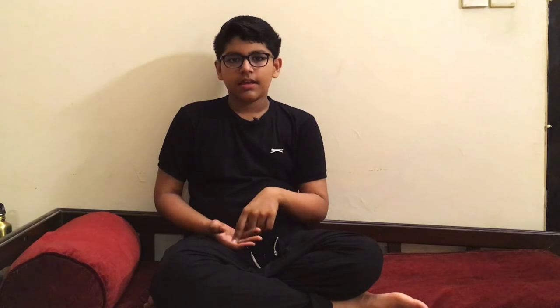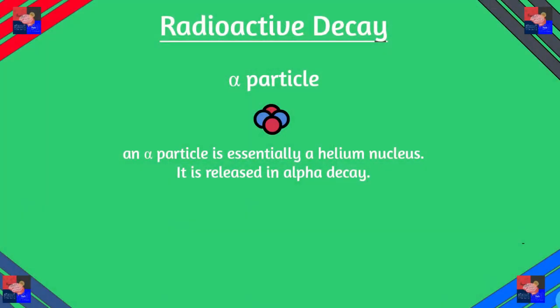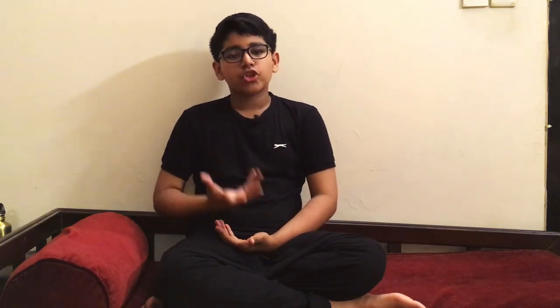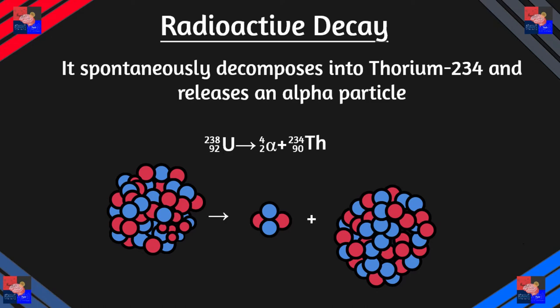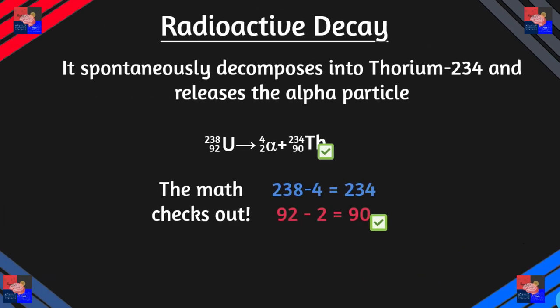First is alpha decay, second is beta decay, and lastly gamma decay. The alpha particle is essentially a helium nucleus — two protons, two neutrons. For an example, let's look at the most famous radioactive element of all time: uranium. The most common isotope is uranium-238, which is about 99% of all natural uranium. It spontaneously decomposes into thorium-234 and releases an alpha particle. As you can see from what I've shown, the math checks out. We don't write the charges, even though we know that there are ions here.